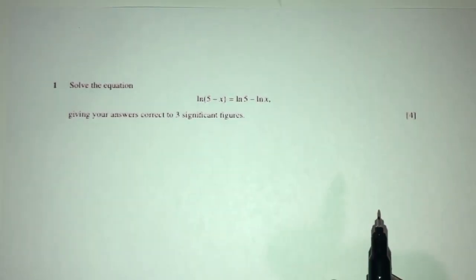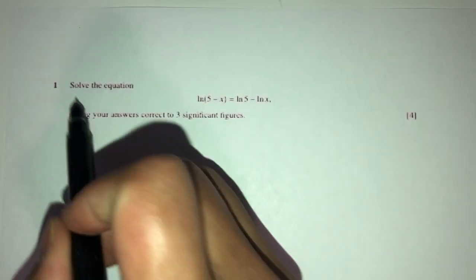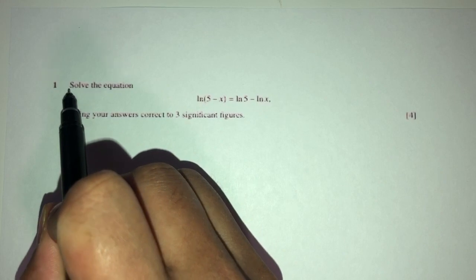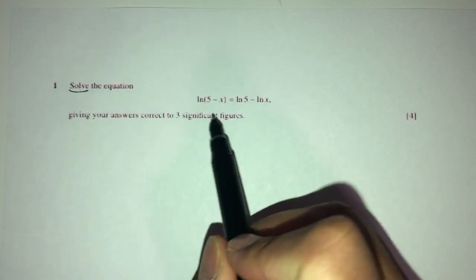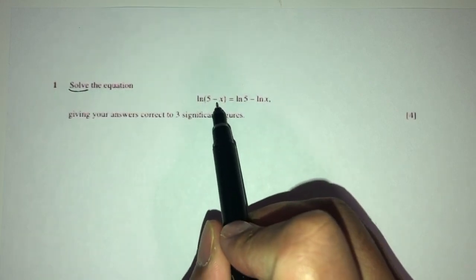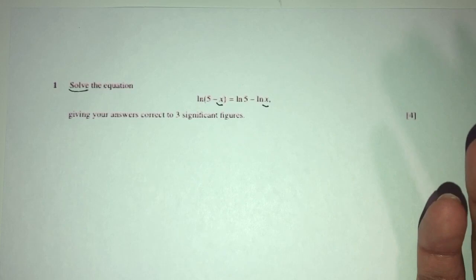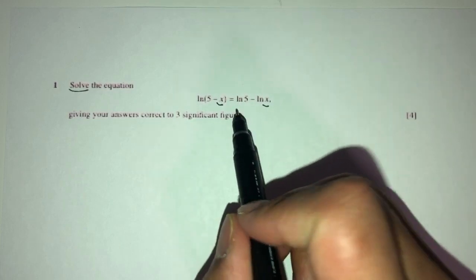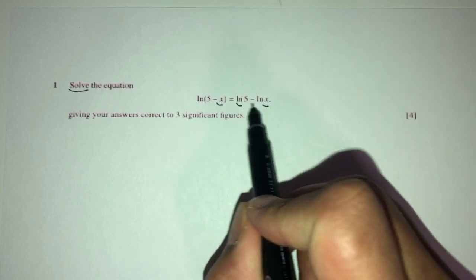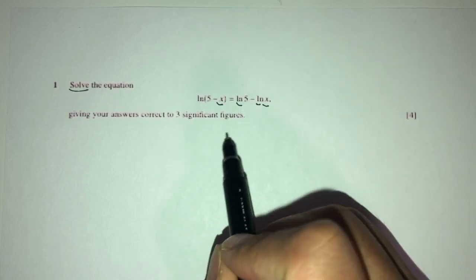Let's move on to question number one. Here we have to solve the equation. Solving means finding the unknown — we have to find the value of x. How can we simplify this? By observation, we can see here we have ln and ln.